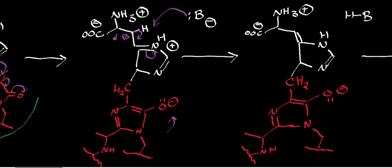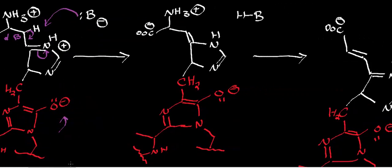In the next step of the mechanism, we're actually going to do the deamination. This lone pair on the amine kicks in here, and that forces these pi electrons, causing the deamination and loss of the leaving group. As ammonia leaves, it's going to pick up the proton from the base — specifically the proton that came from the beta carbon of histidine.